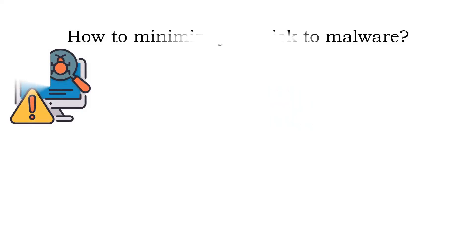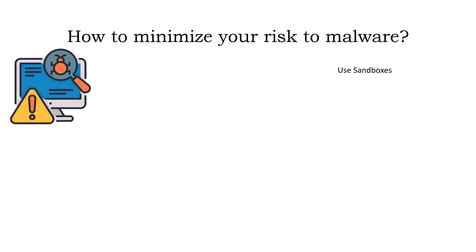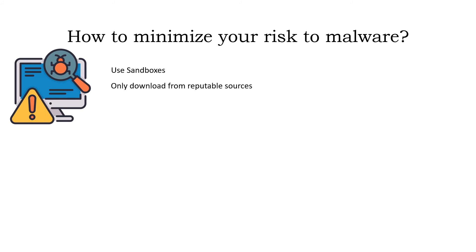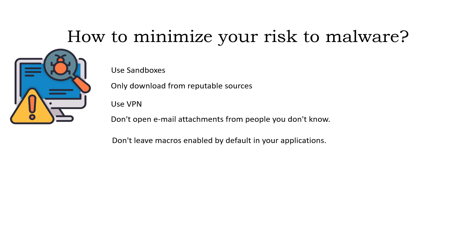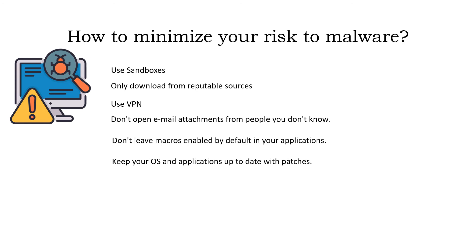There are a number of simple things that you can do in order to minimize your risk to malware: use sandboxes; only download from reputable sources; use a VPN; don't open email attachments from people you don't know; don't leave macros enabled by default in your applications; keep your OS and applications up to date with patches; and if downloading and installing software with a checksum, check the checksum.